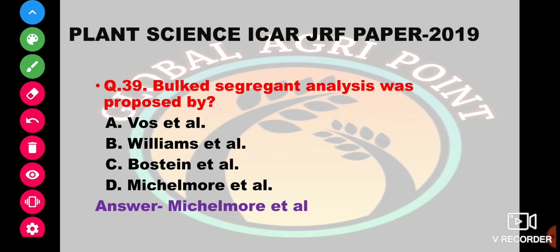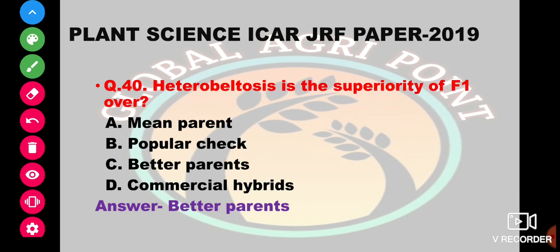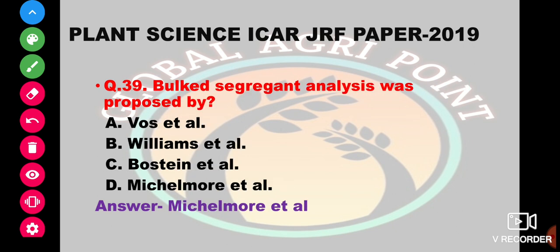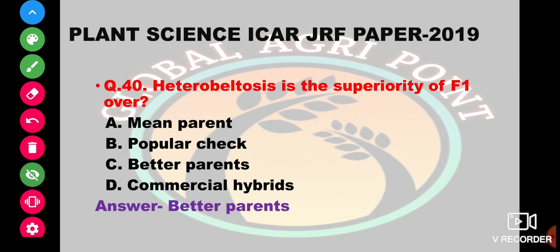Bulk segregant analysis was proposed by Michelmore et al. Heterobeltiosis is the superiority of F1 over the better parent. It is a form of heterosis showing superiority over the middle parent, popular checks, better parent, or commercial hybrids. The answer is better parent.